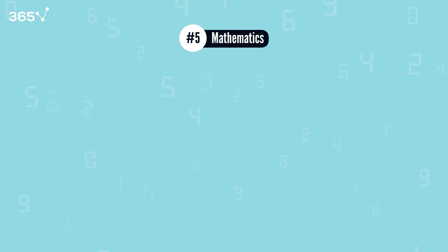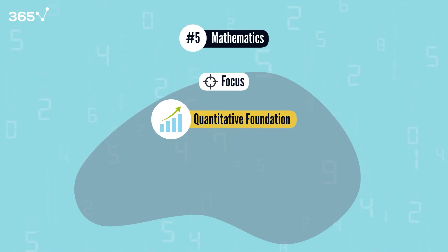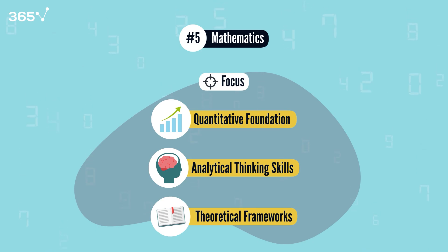Number five, mathematics. A mathematics degree gives you the strong quantitative foundation needed for data science. You'll develop sharp analytical thinking skills and learn the theoretical frameworks that help you tackle complex data problems.